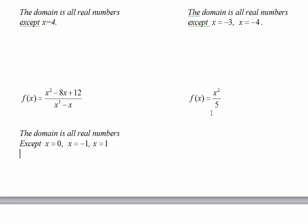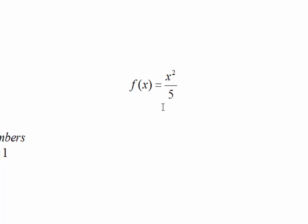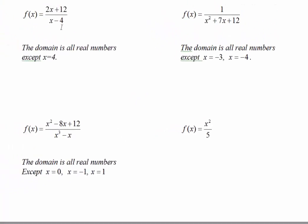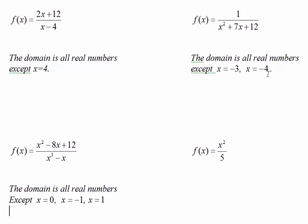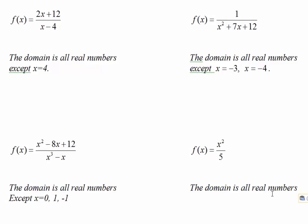For the last problem, think about whether any value of x would make my denominator 0. The answer is no. The domain is all real numbers. If we graph x²/5, it's just a parabola — there are no breaks in the graph. Whereas in the other three examples, there would be a break at x = 4, x = -3, or x = -4. So the domain for this last problem is all real numbers.